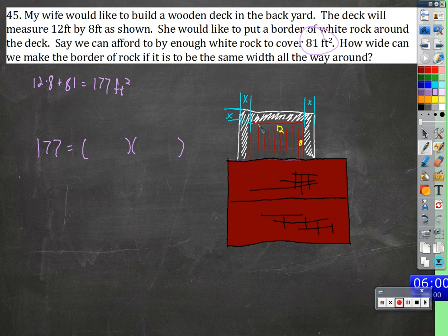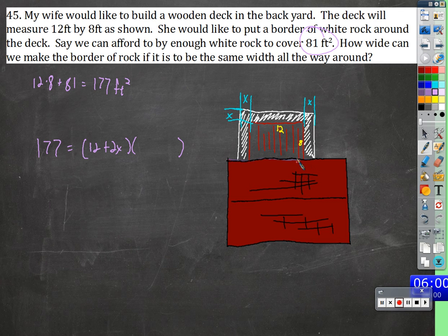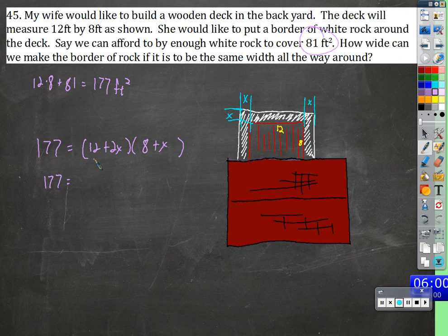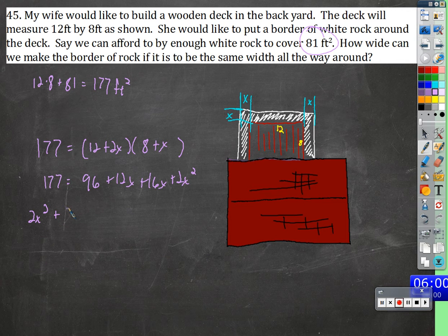What would be the length here? It'll be 12, and on either side there's border with width x — so 12 plus x plus another x, which is 12 plus 2x. The width will be 8 and then another x on one side — 8 plus x, because the house is on the other side. So 177 equals (12 plus 2x)(8 plus x). We multiply this out: 8 times 12 is 96; 8 times 2x is 16x; 12 times x is 12x; and 2x times x is 2x squared. So we get 2x squared plus 28x plus 96 equals 177.